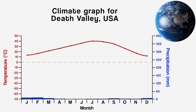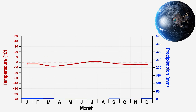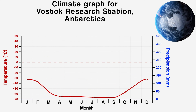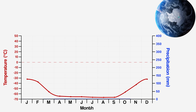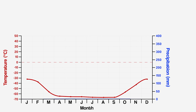And finally, here is the climate graph for Vostok Research Station in Antarctica, the coldest place on Earth. And, well, yeah — it's very, very cold all year round. But check out the precipitation as well. There's even less than Death Valley when you add it all up. That's right — Antarctica is in fact a desert.